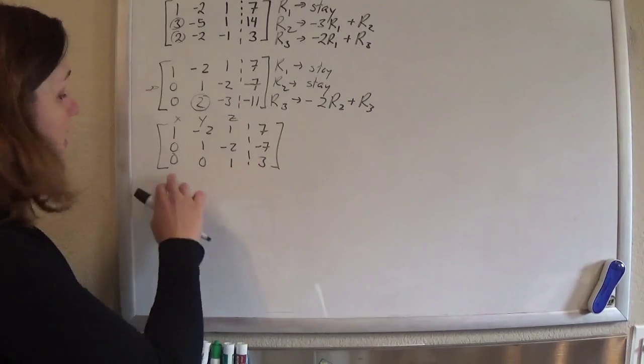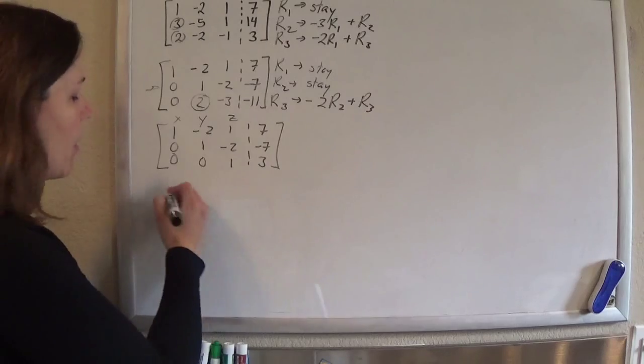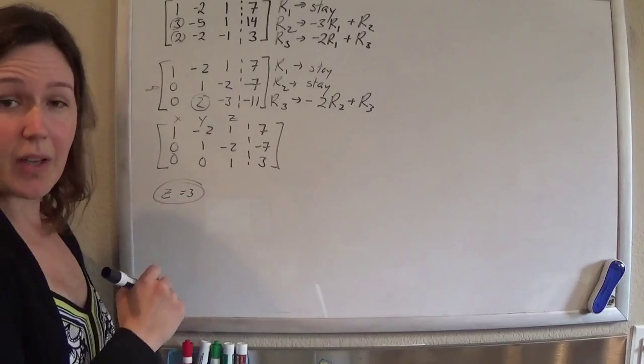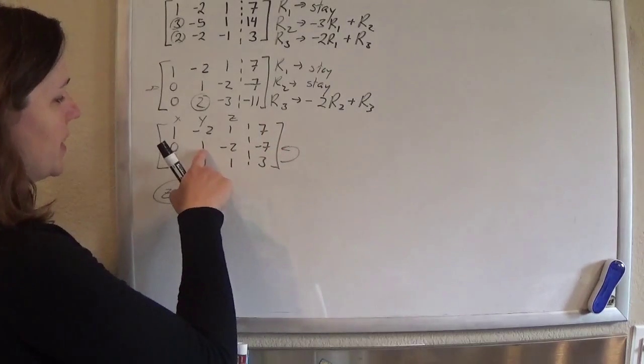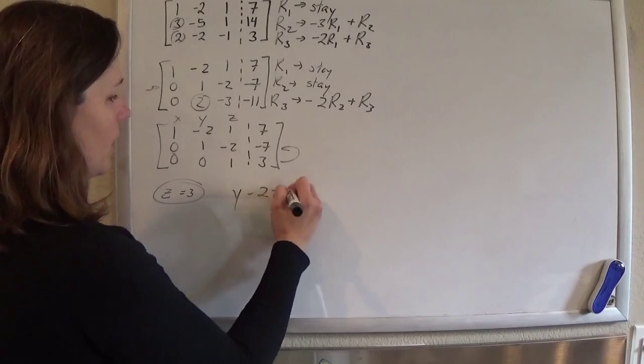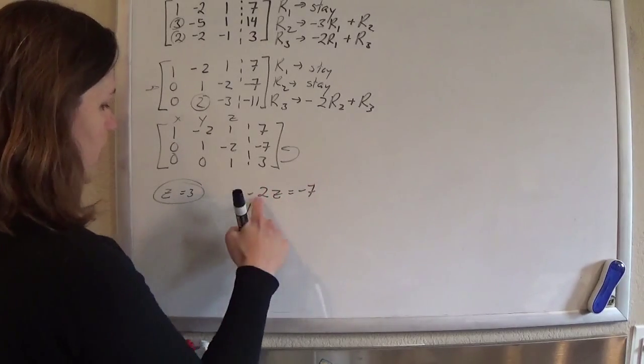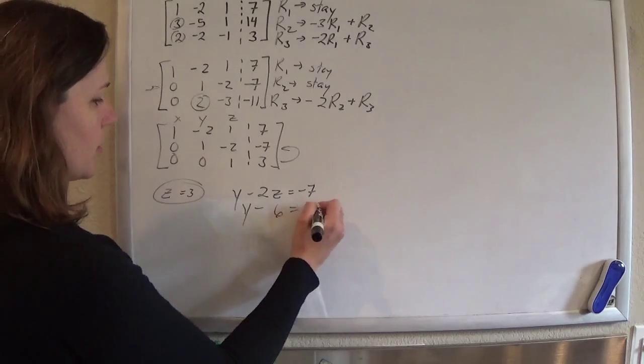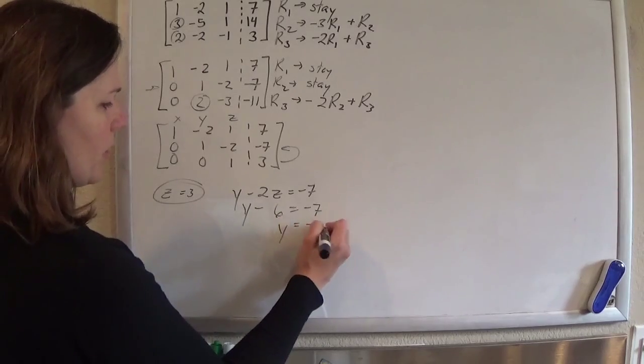So this last row translates to 0x plus 0y plus z equals 3. So z equals 3. Check. We've got one. Now, hopscotch up here. And this means that 1y minus 2z equals minus 7. So y minus 2 times 3, 6 equals minus 7. So y is negative 1.